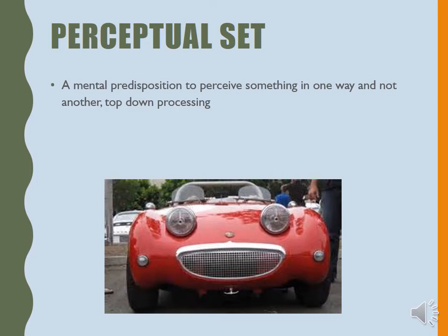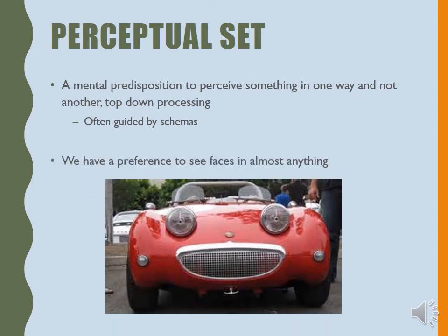A perceptual set is our predisposition — our want-to, need-to preset — to perceive something in a certain way and not another. In other words, it's all top-down processing. It's often guided by what we call schemas — mental setups, precepts. A schema is a blueprint, and so we make blueprints for how we understand the world. We see a face in the car because we have a huge perceptual set, a preference for faces.